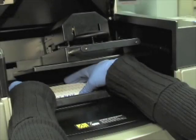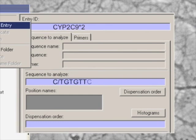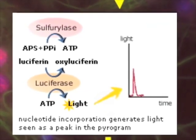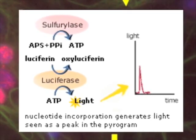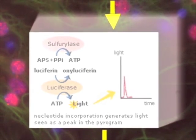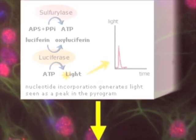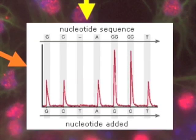Once a plate is loaded, nucleotides are incorporated based upon a sequence provided by the software. Once released, the pyrophosphate is used in a reaction that results in the release of ATP, which is used by luciferase to convert luciferin to oxyluciferin, resulting in the emission of light. The emitted light is collected by a CCD camera and recorded as peaks, also known as pyrograms.